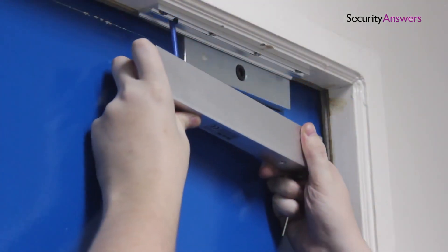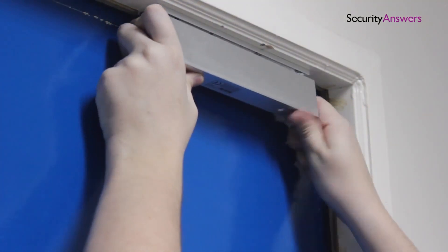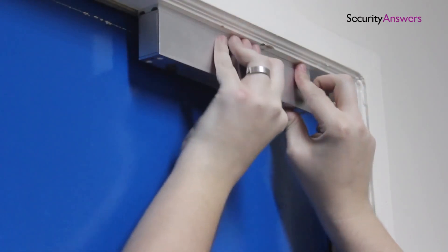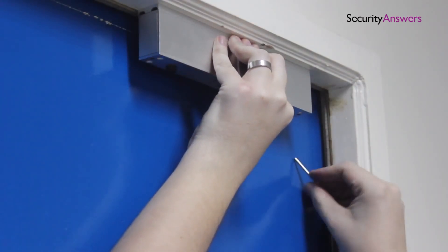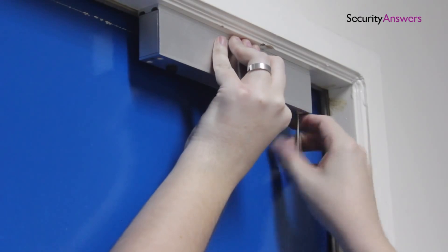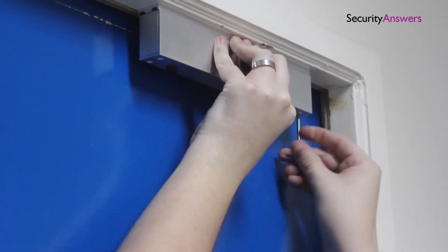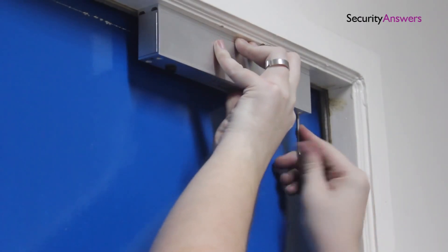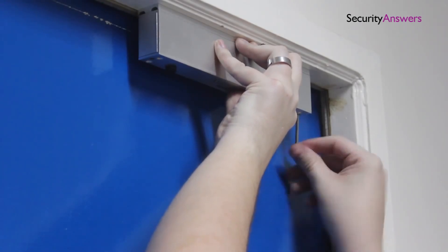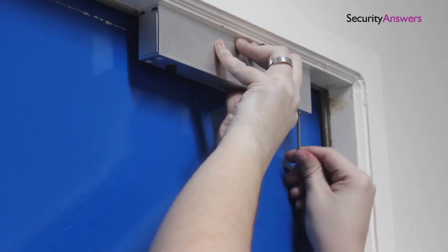Now thread your cable through the hole you made and position the lock to ensure the fitment is correct. If everything lines up correctly, go ahead and tighten into place using the provided screws. Once again, it's important to remember that the two magnets should sit flush together to ensure a decent connection can be made for the lock to work.